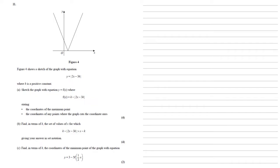For Part A, we need to sketch the graph with equation y equals f of x, where f of x equals k minus modulus 2x minus 3k. Let's start by thinking about the graph of y equals minus the modulus 2x minus 3k. This is just the negative version of the graph we've already been given, so it's going to reflect it in the x-axis. Its maximum is at the same point as the minimum of the original graph.